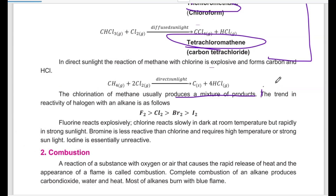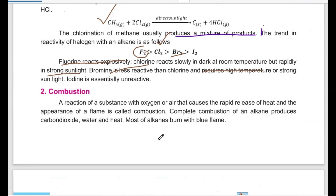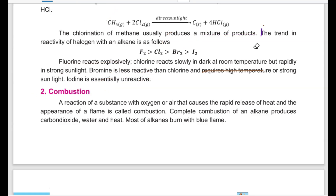Chlorine reacts slowly in the dark at room temperature but rapidly in strong sunlight. Bromine is less reactive than chlorine and requires high temperature and strong sunlight. Iodine is essentially unreactive — it does not react with alkanes. In the case of fluorine, even with a little light, the reaction is explosive and dangerous. For bromine, you must provide strong sunlight or high temperature to make it react.